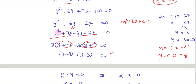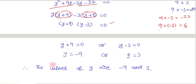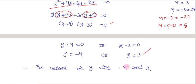Since the product of two numbers is 0, at least one of them must be 0. So either y + 9 = 0, giving y = -9, or y - 3 = 0, giving y = 3. Therefore, the two values of y are -9 and 3.